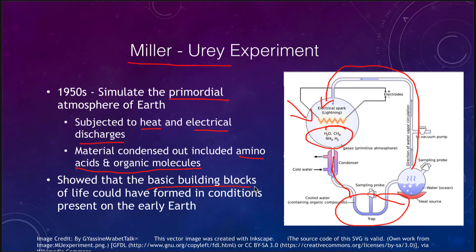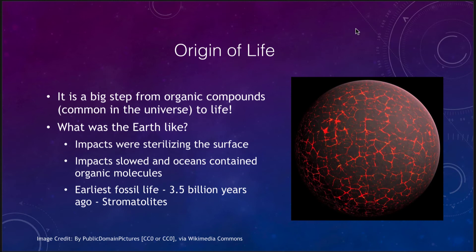What we see in this trap is that we find amino acids and organic molecules that form from these basic compounds that we know would have been present in the early earth's atmosphere. So the basic building blocks of life could have formed under conditions present in the early earth, and these compounds are not unique to earth, so they likely could have formed elsewhere. What we don't know is how common it is for life itself to actually form — it's a very big step from organic compounds, which are very common, to life.